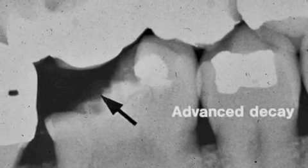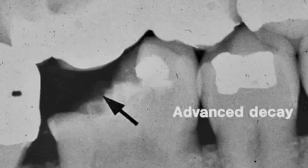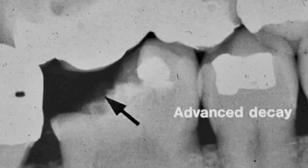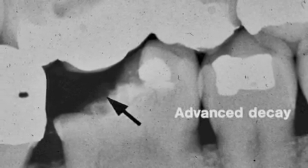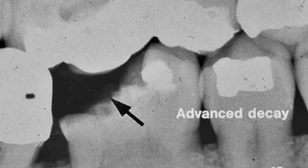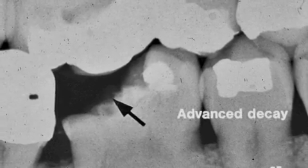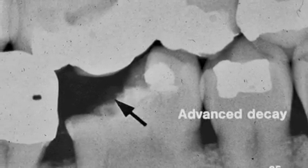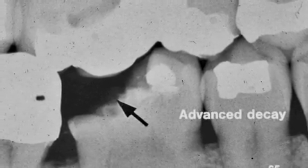This is tooth number 30. We have advanced decay more than halfway into the dentin. It is a C4 caries classification on radiographs.